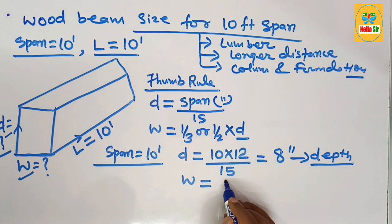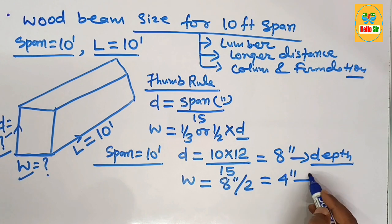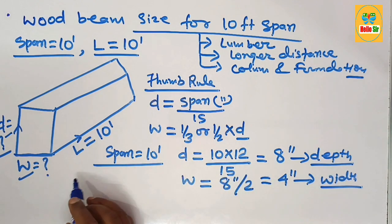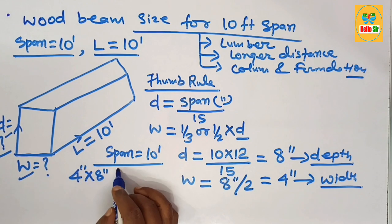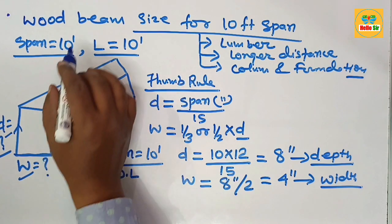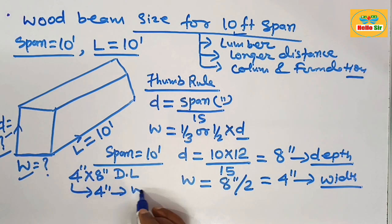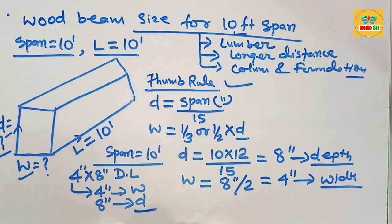The width section equals the depth section divided by 2, which comes to about 4 inches. This means you need something like a 4 by 8 inch dimensional lumber as the wood beam required to span 10 foot — where 4 inches is the width and 8 inches is the depth. This calculation is based on thumb rule.